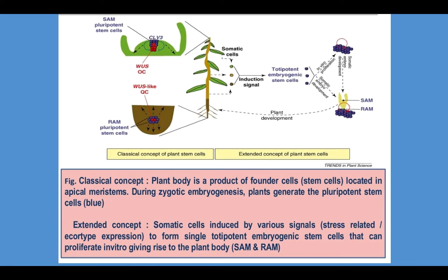For plants, we can give two concepts. One is the classical concept, where the origin is embryonic. The plant body is a product of founder cells located in the apical meristem. During zygotic embryogenesis, plants generate the pluripotent stem cells, which you can see in blue colors in both parts — shoot apical meristem as well as root apical meristem.